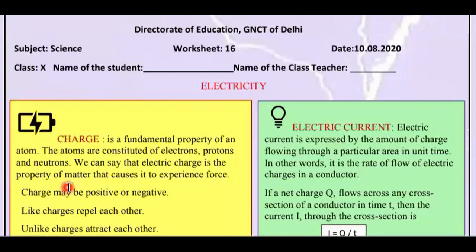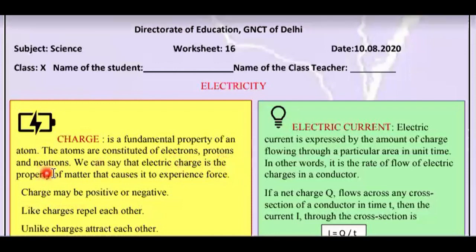The charge may be positive or negative. The electrons carry negative charge, the protons are positively charged, and the neutrons are neutral in charge. So in each matter there are charges, because in each matter there are atoms, and in each atom there are protons, neutrons, and electrons — and because of this, matter has electric charge.